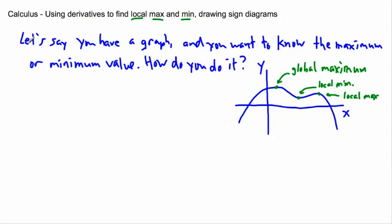So let's say you have a graph and you want to know the maximum or minimum value. I've shown you on the graph what it looks like, but we can do this mathematically. In fact, we can calculate the local maxes and mins without ever knowing what the graph looks like — I think that's more powerful.